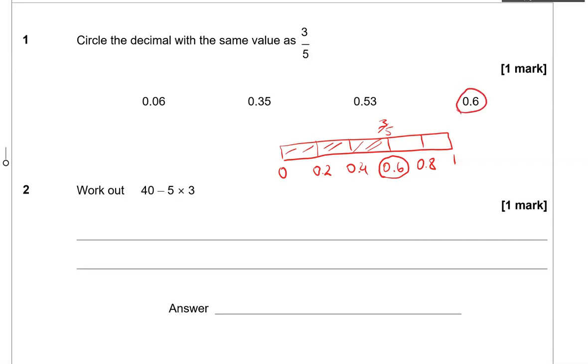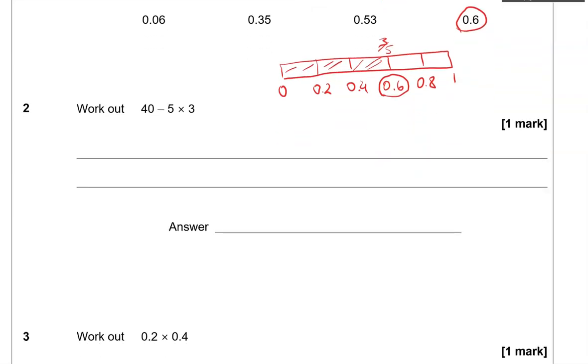You could also think of 3 fifths being the same as 6 tenths. So doubling both numbers, 6 tenths is the same as 0.6, or you can think of it as 60 out of 100. That's still 0.6. So you could use different methods to get to the conclusion.